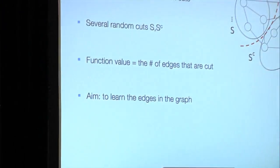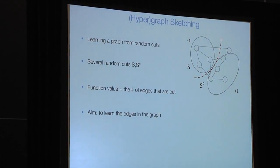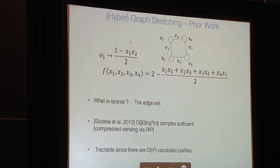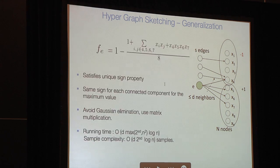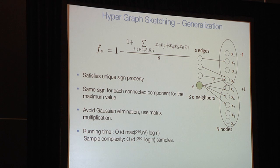For learning graphs: an unknown sparse graph has vertices but unknown edges. A monkey colors vertices plus and minus and tells me how many edges cross from minus to plus — that's a random cut. Learning a graph from such cuts is equivalent to learning a sparse degree-2 polynomial, and we can learn hypergraphs the same way: each hyperedge of degree D gives a polynomial term of degree D. Crucially, all sparse polynomials corresponding to graphs and hypergraphs satisfy the unique sign property, so we apply Gaussian elimination to reduce the space and then compressed sensing to recover the structure.